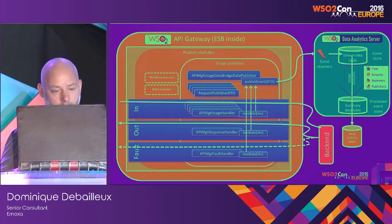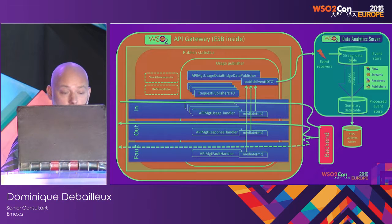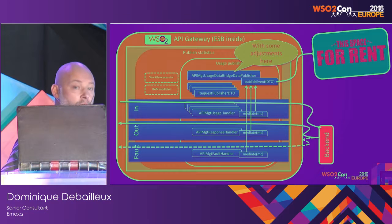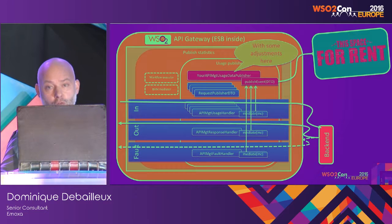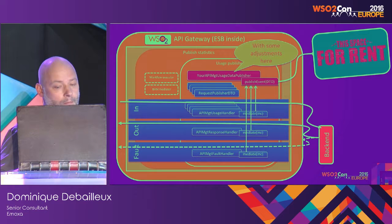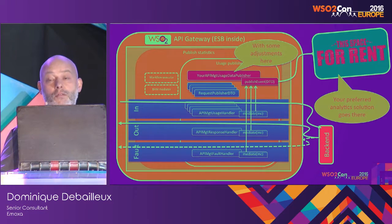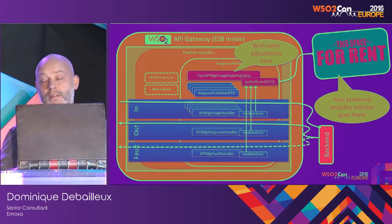API Manager is flexible enough to allow you to use your preferred stack, so you can start with another solution without any problem — just by configuration and some light development. You just have to write your own implementation of the publisher class. There is a space for rent, and you can use your own implementation of this class. Just one class to create, some configuration, and you can put anything you want instead of DAS.